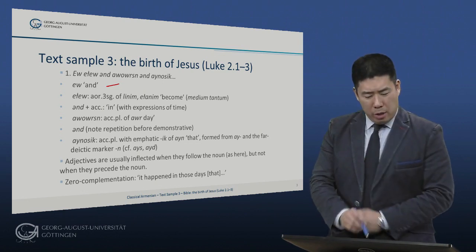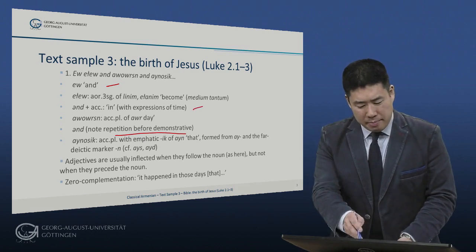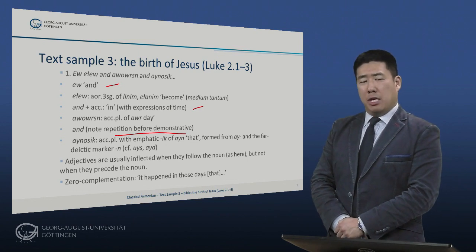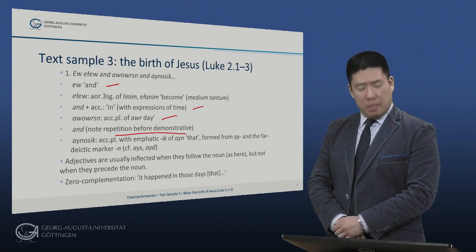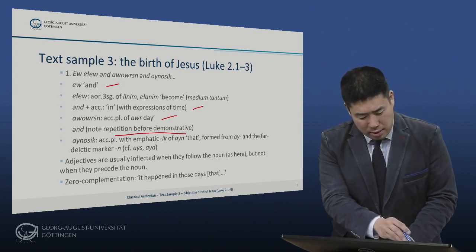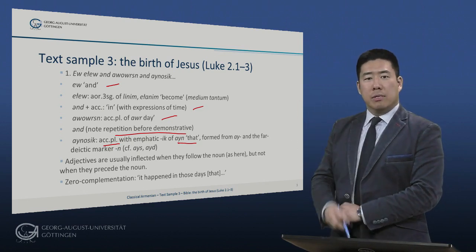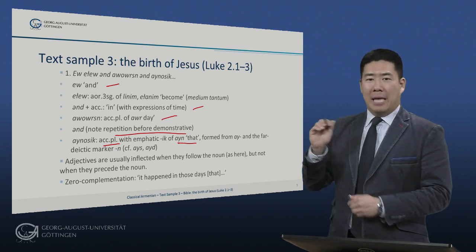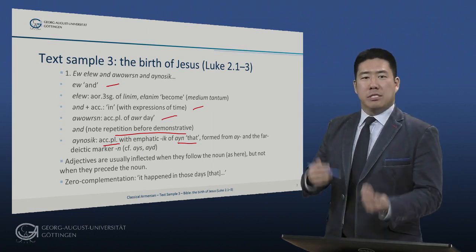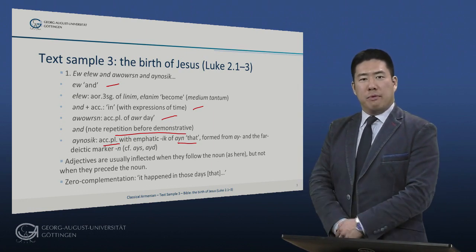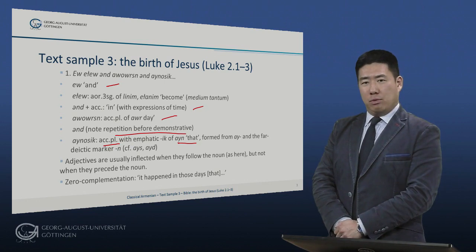Und, you'll notice, occurs twice. Note the repetition before the demonstrative: 'it came to pass, it happened, in' — with expressions of time, nd plus accusative, here meaning days, accusative plural of 'day,' means 'in the days.' Which days? In days, in einosik — that's accusative plural with emphatic eek of ein, meaning 'that.' Ein is formed from ei and the far datic marker: eis means 'this,' eid means 'that,' and ein means 'that over there,' referring to a long time ago. Hence, 'in those days.' This is typical: to repeat the preposition before a demonstrative. Note that adjectives are usually inflected when they follow the noun, as in this case, but not when they precede the noun, as we've seen in the videos on syntax.